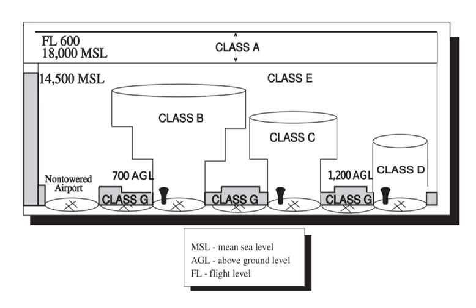Class B airspace is defined around key airport traffic areas, usually surrounding the busiest airports in the US by number of IFR operations and passengers served. The exact shape varies, but in most cases it has the shape of an inverted wedding cake, with a series of circular shelves of airspace of several thousand feet in thickness centered on a specific airport. Each shelf is larger than the one beneath it, normally beginning at the surface, with successive shelves of greater radius beginning at higher altitudes. Many Class B airspaces diverge from this model to accommodate traffic patterns or local topological features.